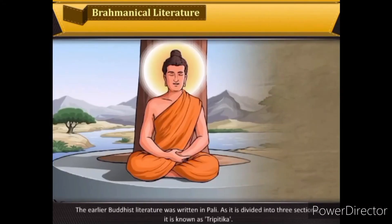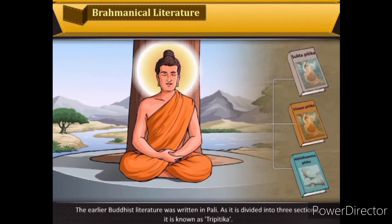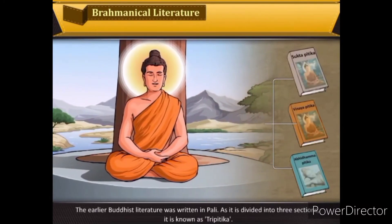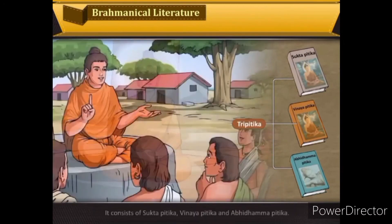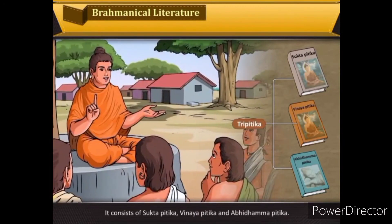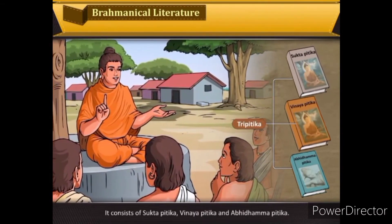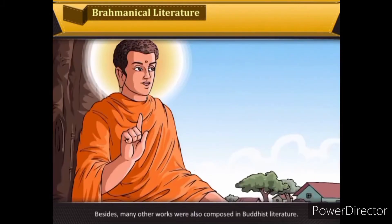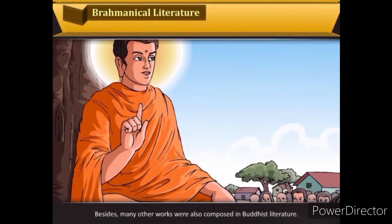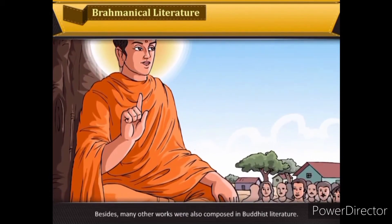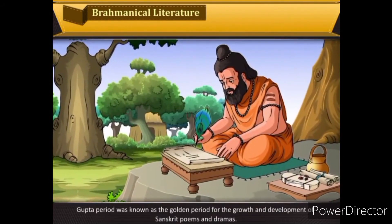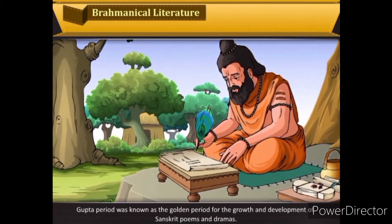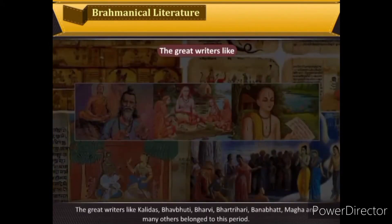The earlier Buddhist literature was written in Pali. Divided into three sections, it is known as Tripitaka, consisting of Sutta Pitaka, Vinaya Pitaka, and Abhidhamma Pitaka. Many other works were also composed in Buddhist literature. The Gupta period was known as the golden period for the growth and development of Sanskrit poems and dramas.